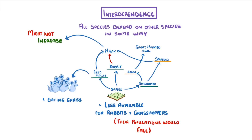And if we wanted to, we could go on to describe the effects on all the other species too, such as how the decline in grasshoppers could lead to a decline in the shrew and sparrow populations as well. There's no need to remember any specific examples — you just need to understand how these relationships work, and be able to predict the knock-on effects of any changes.